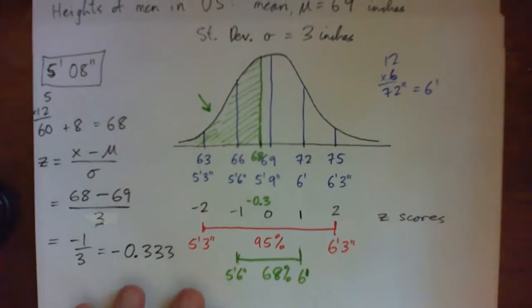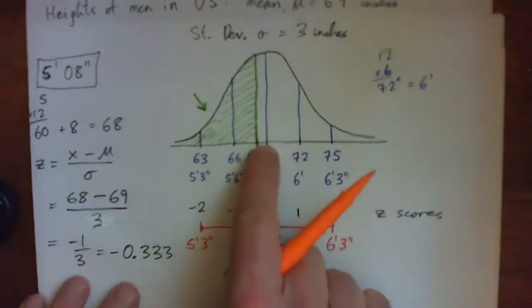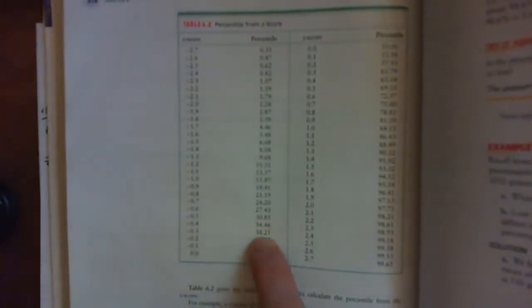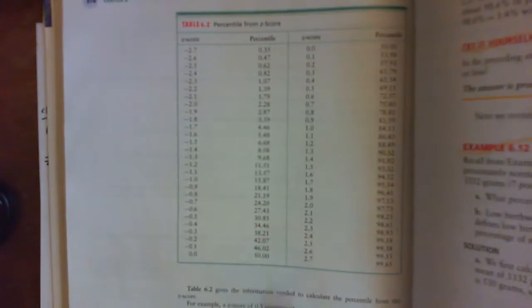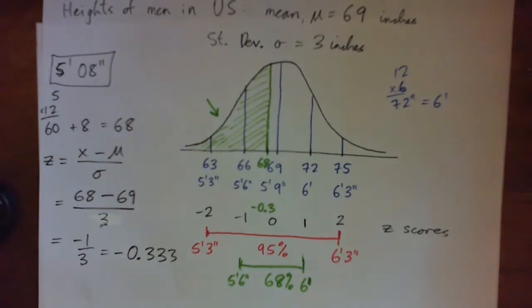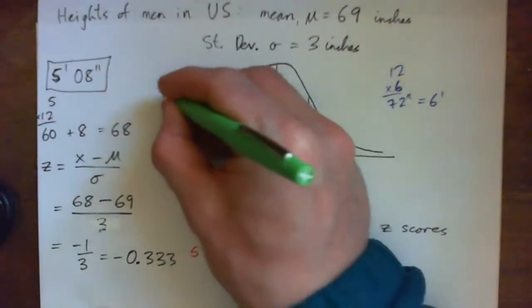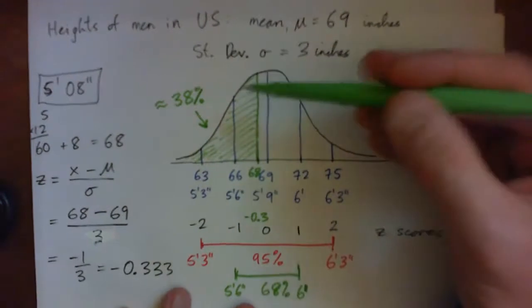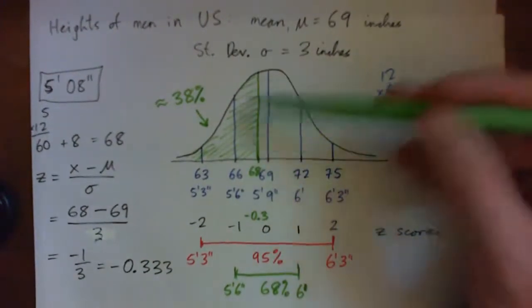This is definitely less than 50%. Looking up z equals negative 0.33 in the table, that corresponds to 38.21%. We'll round that to 38% — it's an estimate anyway. So the man at 5 foot 8 — that's 68 inches — is taller than about 38% of the population.